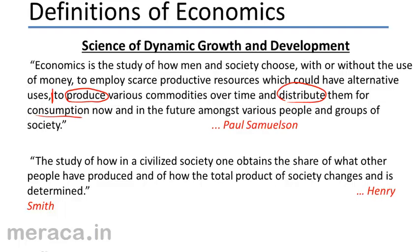Henry Smith tried to define economics as the study of how a civilized society obtains its share of what other people have produced and how the total product of society changes over time. He talked about two groups — producers and consumers — and said over a period of time the total product of producers goes on increasing, and economics is the study of this growing total product — times of growth and development.